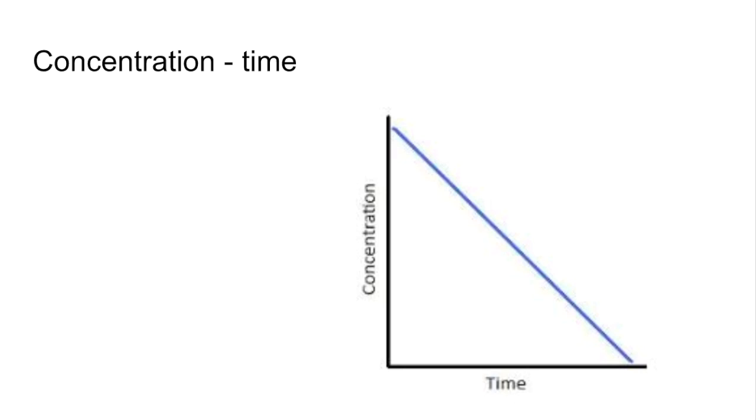So we'll start with this concentration-time graph and the very first thing to say is that rate is equal to the change in concentration divided by the change in time. So in other words, it's the gradient of the line.